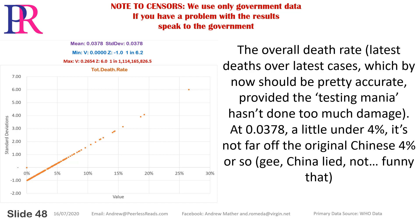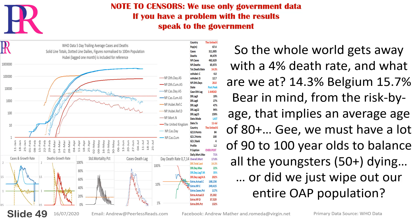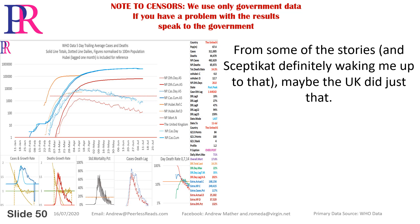The overall death rate — latest deaths over latest cases, which should be pretty accurate now — is 0.0378, just under 4%. That's not far off the original Chinese figure of ~4%. So the whole world gets away with a 4% death rate. Belgium is at 14.3%, the UK at 15.7%. Bear in mind: from the risk-by-age profile, that implies an average age of 80-plus — we must have a lot of 90-to-100 year olds to balance the younger deaths, or perhaps we wiped out the entire elderly care population.